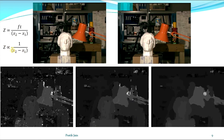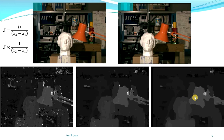There is an inversely proportional relation: if x2 minus x1 is larger, then z will be smaller. For this lamp you can see that x2 minus x1, the disparity, is larger — a lighter shade means a larger x2 minus x1. A darker shade means a small value of x2 minus x1, which means the z value is larger, so those objects are far away. This lamp is closer to the camera and the statue lies somewhere in between the lamp and the background.